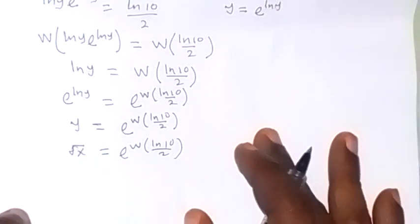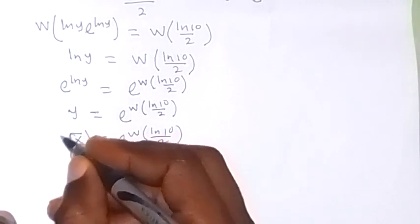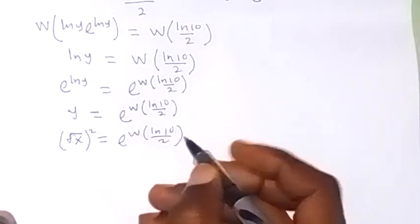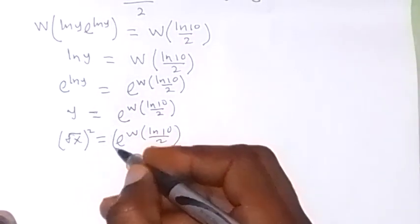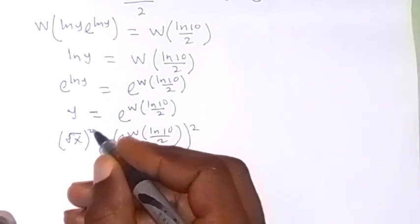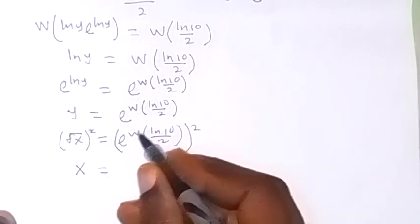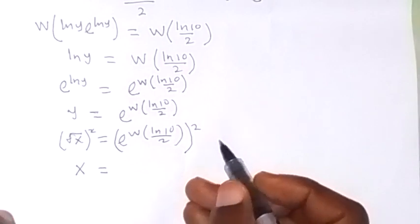Then since we are finding x from here, we can take the square on both sides. So let's take the square on both sides. We square this side, then we square this side. Then square cancels square root. We have x left here. Then when we simplify what we have here, then square it, we are going to have approximately 3.453.